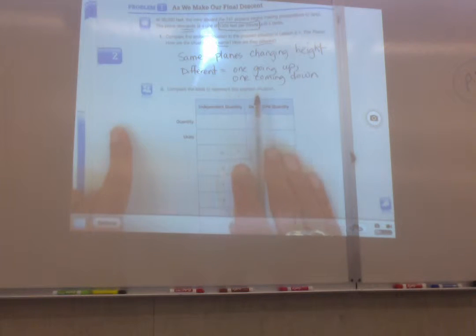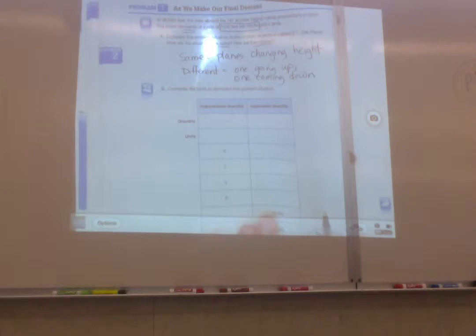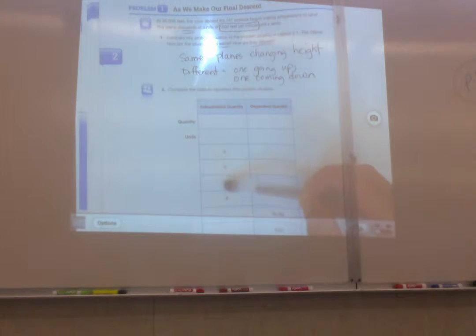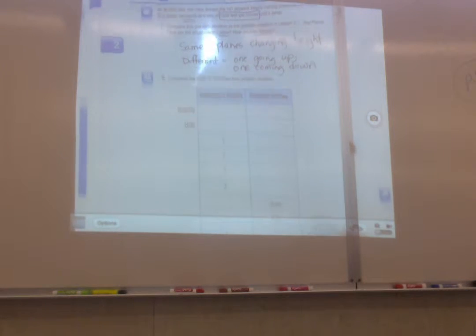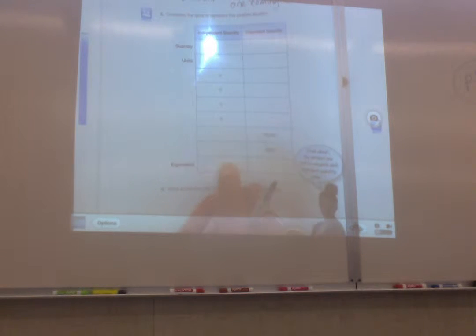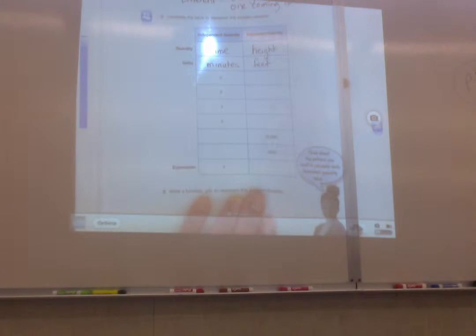Complete the table. Represent this problem situation. What is happening? Independent quantity, dependent quantity. Look at the numbers here: zero, two, four, six. Eighteen hundred, six thousand. What do you think this row represents? Minutes, with a unit of time. So something's changing over time.